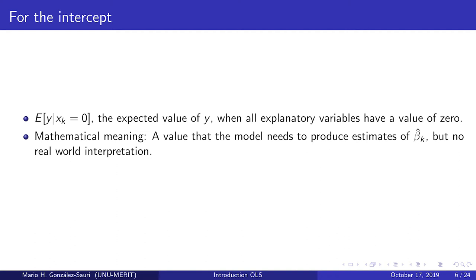For instance, if a model is predicting weight and one of the determinants is height, the intercept will not have a meaningful interpretation if there is a person that has zero height.